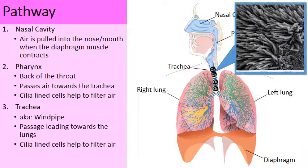Like the pharynx, the trachea is also lined with cilia to help trap and catch any irritants, allergens, and pollen grains that could be in the air and could irritate one's ability to breathe.